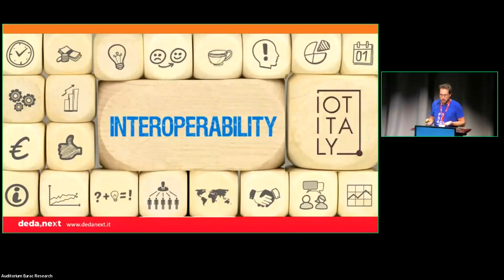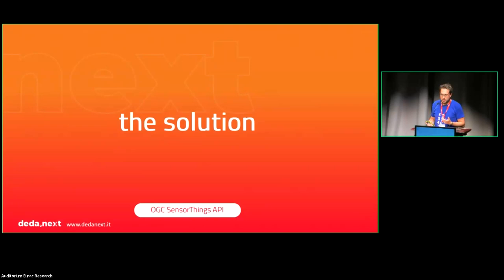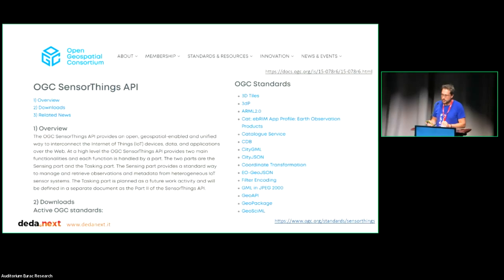So what was lacking here was interoperability. And the solution we found is to use a standard. Luckily, a standard was already available from the Open Geospatial Consortium about sensor data, and we decided to adopt it.